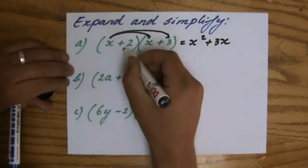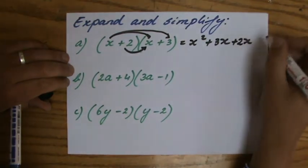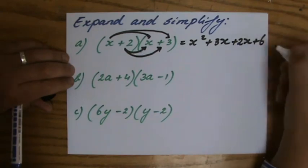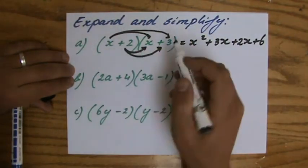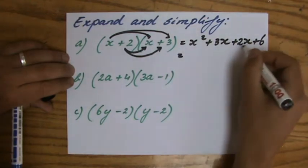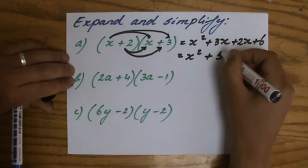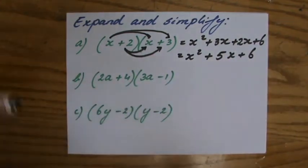I'm finished there. Then I do a positive 2 times x, that is 2x, and 2 times 3, both positive, so plus 6. It says expand and simplify because I have those like terms there in the middle. So x squared plus 5x plus 6.